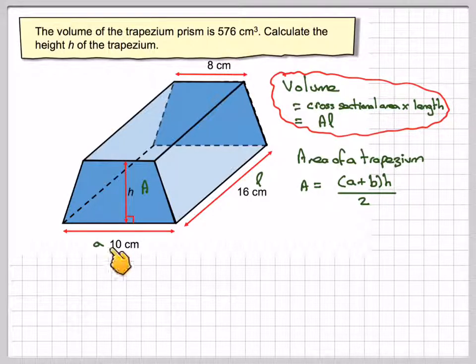So if we call this A, this side A, this side here is the same as this side here, which is also B. So we're going to have 8 plus 10 times H that we don't know, divided by 2. Now 8 plus 10 is 18, divided by 2, and we're going to get 9 times H.